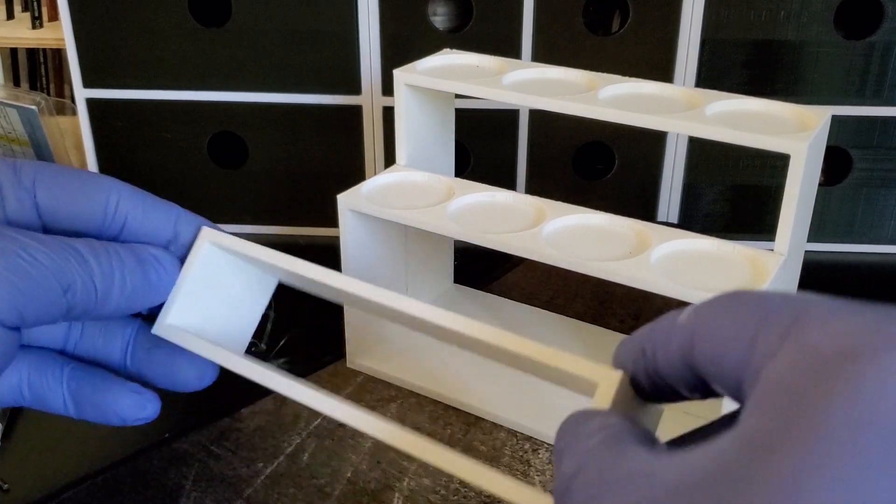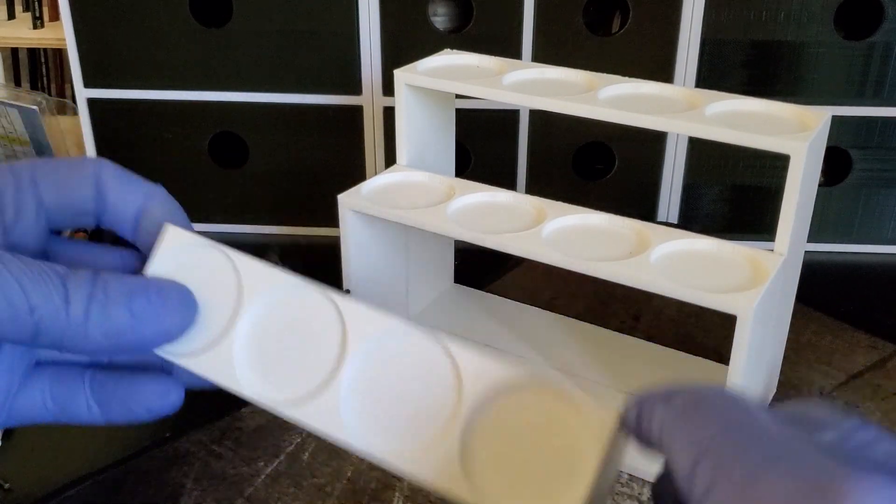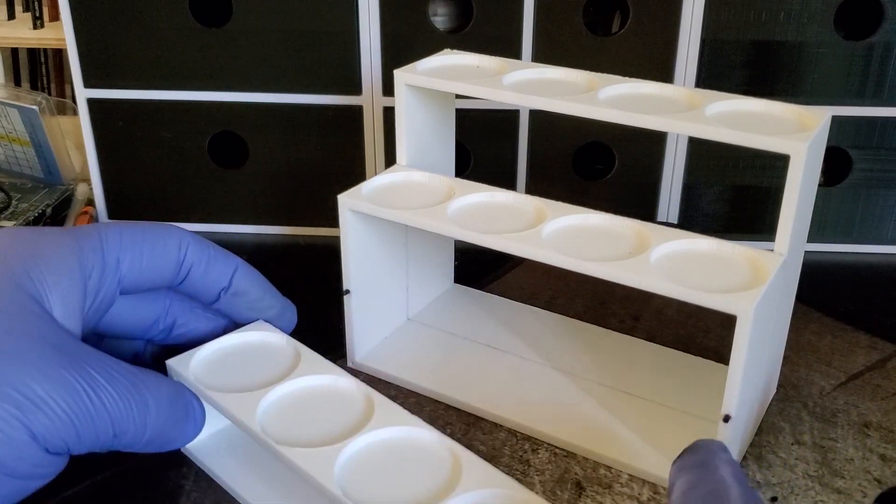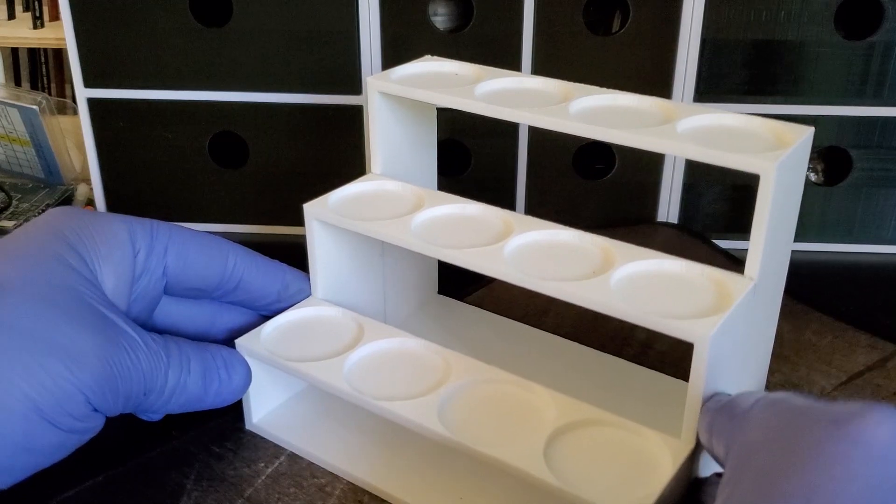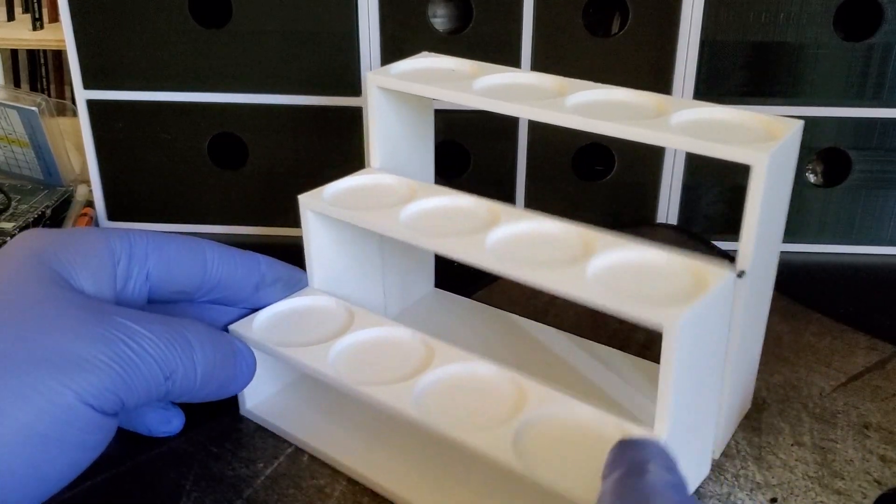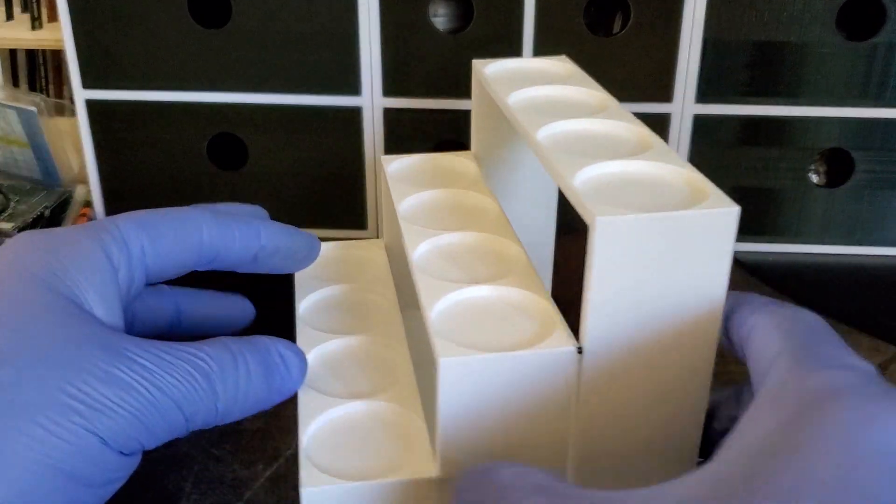They print like this and once they print, you'll see these little filament holes. You put a little piece of filament in there, you line it up, put a little super glue or something and then boom, you're done. I might not actually even glue these. They're pretty sturdy.